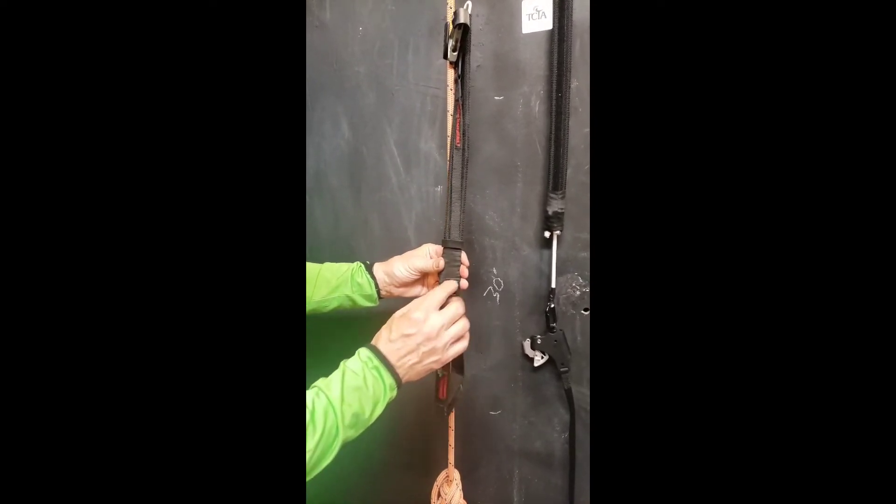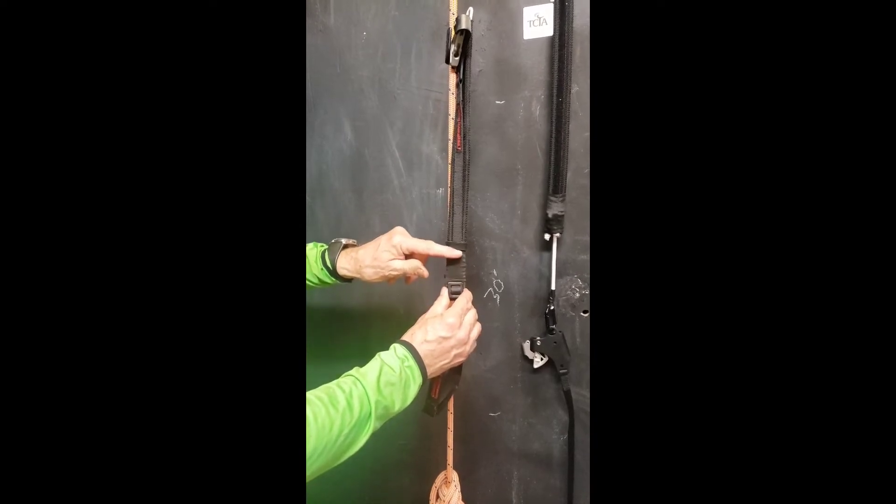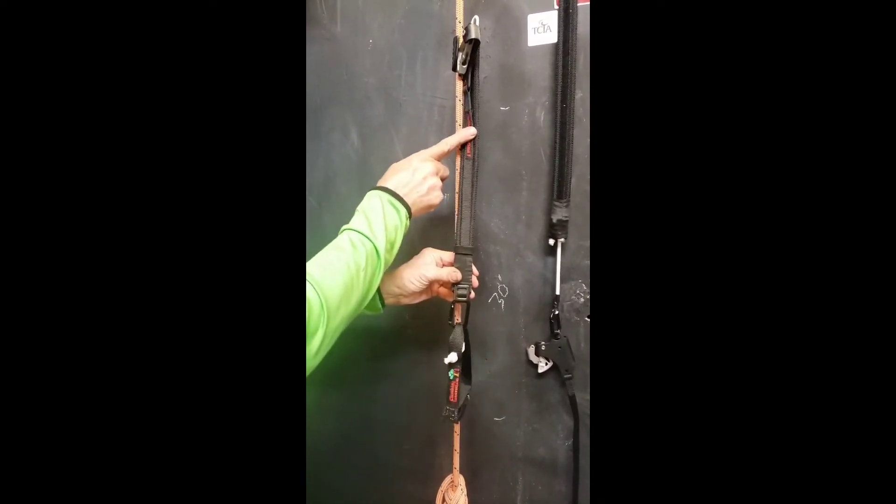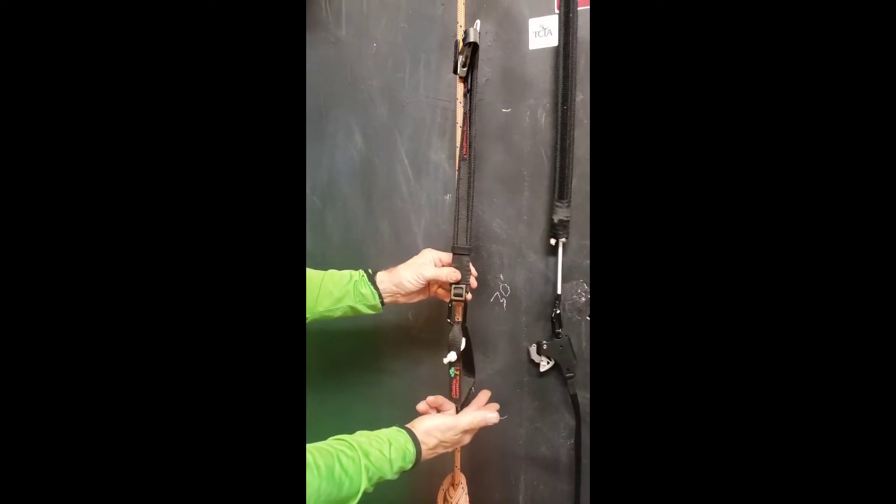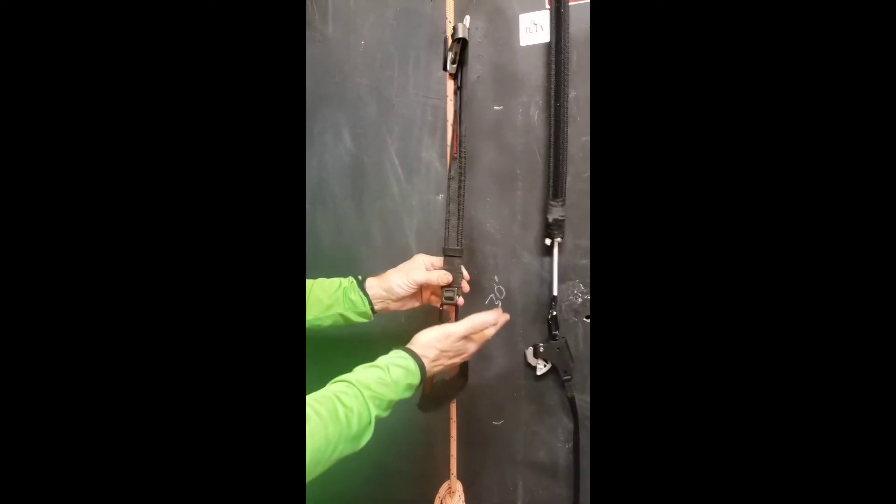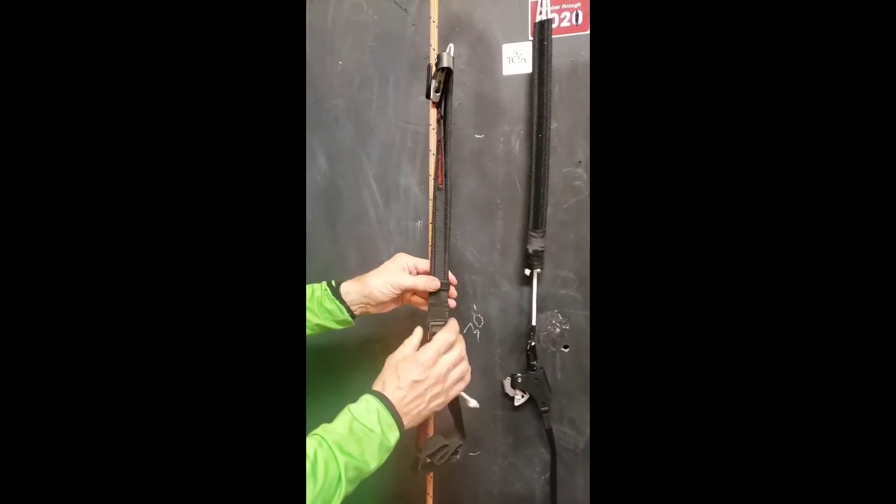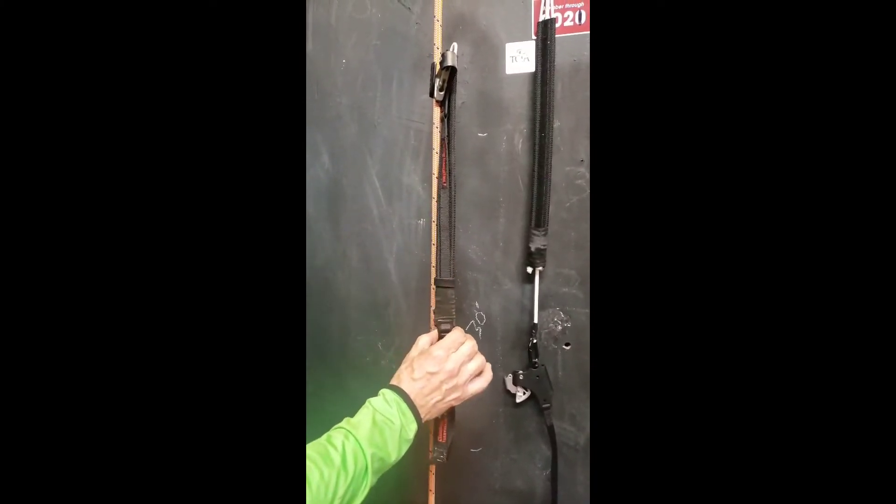This is the buckle that allows you to adjust the length of this. It can go clear up here. It can go clear down here. So, depending on the kind of stride you want that day, whether you want to run or walk, you can adjust that stride.